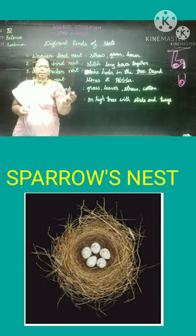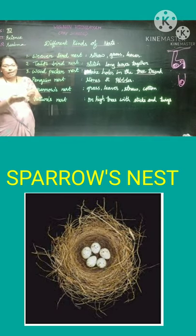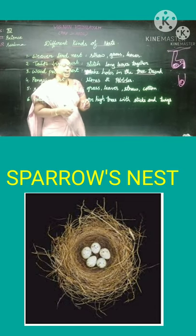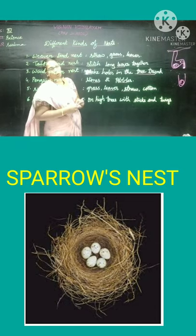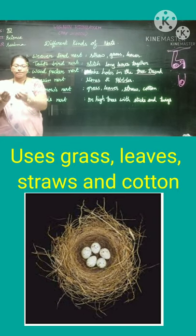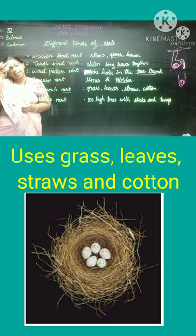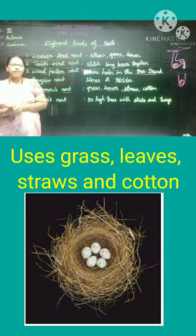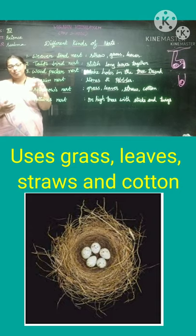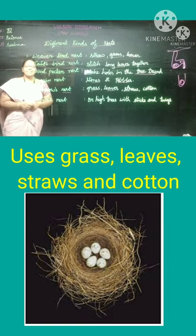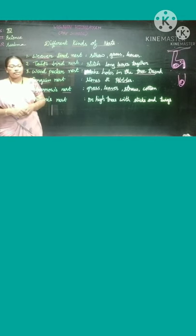Sparrow's nest — we are very familiar with this. The sparrow's nest looks like a small bowl. It is made up of grass, leaves, straws, and cotton. In some houses, we can also see sparrow nests. They build nests on trees and sometimes in the ventilators of your house.